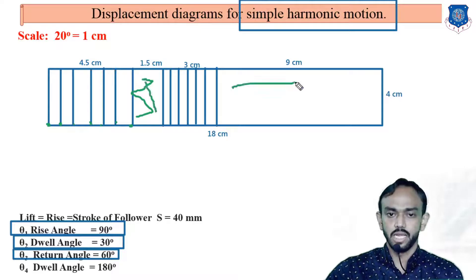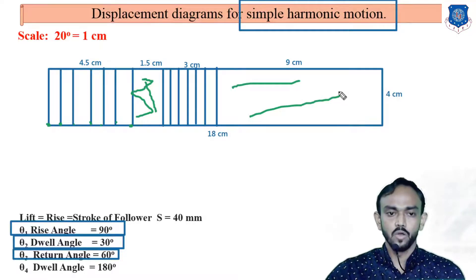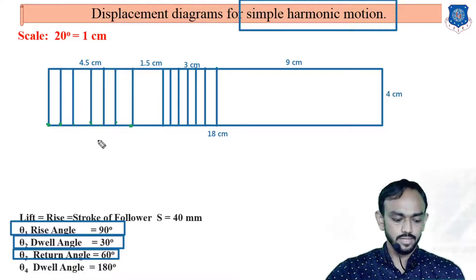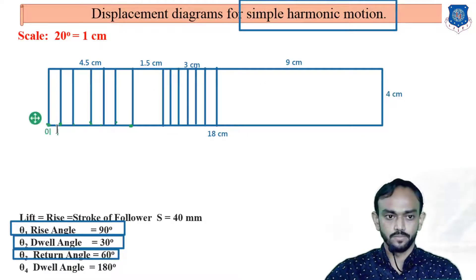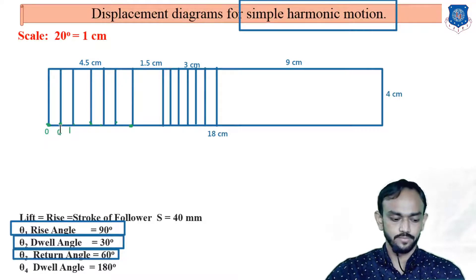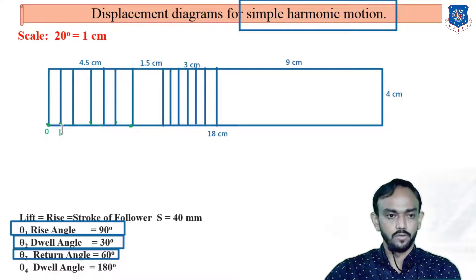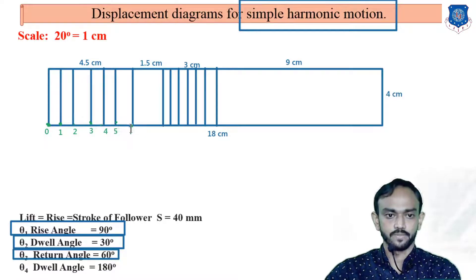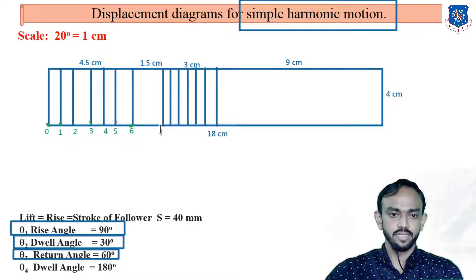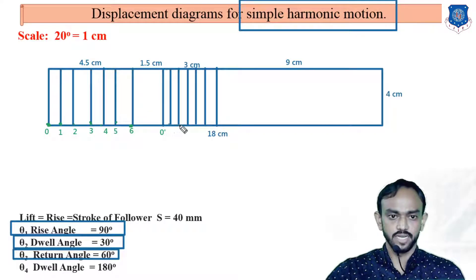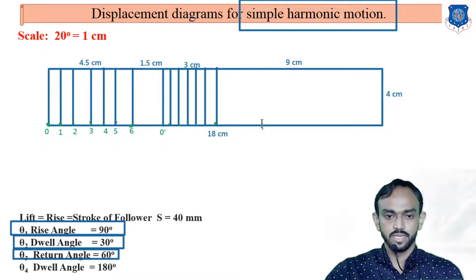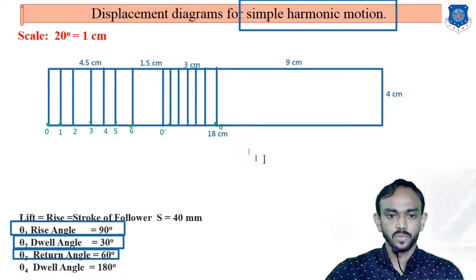Now we number the division points: this is point 0, then 1, 2, 3, 4, 5, and 6 for the rise section. The dwell section we have nothing to do with — it will always remain empty. Same for the return section: zero dash, and giving directly the last point as six dash.